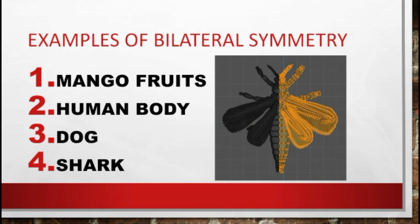Examples of organisms that exhibit bilateral symmetry include mango fruits, human beings, dogs, and sharks. These organisms can be divided to produce mirror images.